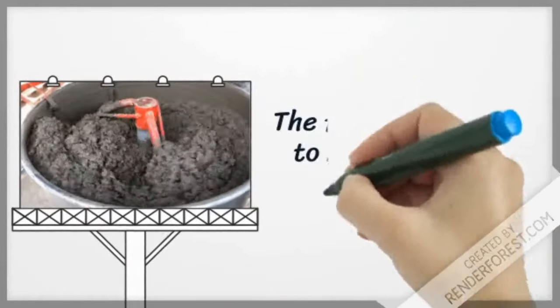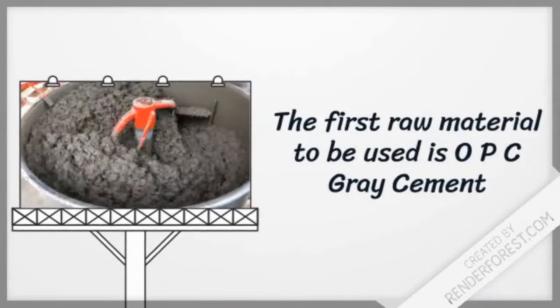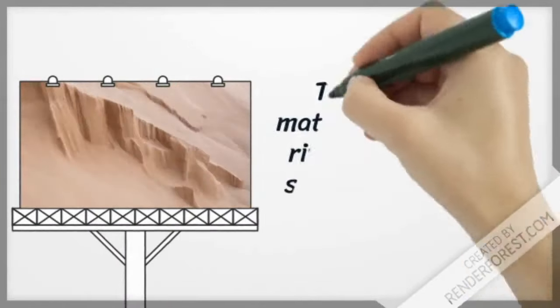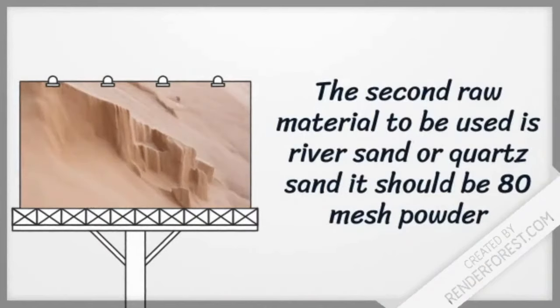The first raw material to be used is OPC gray cement. The second raw material to be used is river sand or quartz sand. It should be 80 mesh powder.